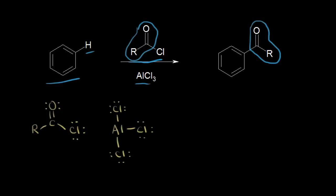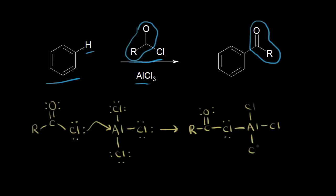They start off the same in that aluminum chloride functions as a Lewis acid and accepts a pair of electrons. The lone pair of electrons on the chlorine donates to the aluminum, which accepts that electron pair. Drawing the result of that Lewis acid-base reaction: we have our carbonyl, with chlorine attached to the carbonyl carbon. The chlorine has two lone pairs of electrons and has now formed a bond with the aluminum. The aluminum is bonded to three other chlorines, gets a negative 1 formal charge, and this chlorine now has a positive 1 formal charge.